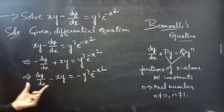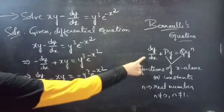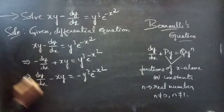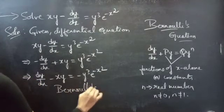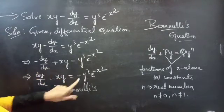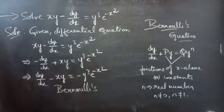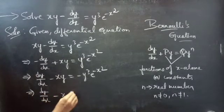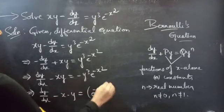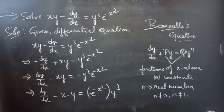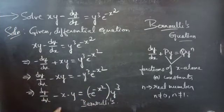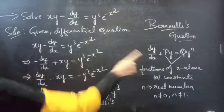Now, we can say that this is in Bernoulli's form. Comparing these two equations, we will get p, q, and n. The standard Bernoulli's equation is: dy/dx plus P(x)·y equals Q(x)·yⁿ. So comparing, we can write dy/dx minus x·y equals Q(x)·y³. This is Bernoulli's in y.